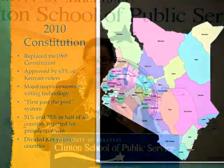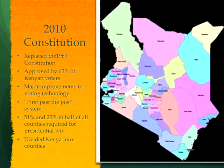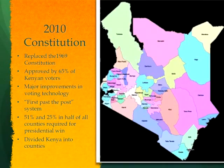After the bloodshed of 2007–2008, there was a real movement toward re-democratization and a realization that the institutions of democracy were still very weak in Kenya. The 2010 Constitution did a lot of important things — it replaced the old 1969 Constitution, was approved by a vast majority of Kenyan voters, and made major improvements in voting technology. Like the United States, Kenya has a first-past-the-post, winner-take-all system — not a coalition government scenario.